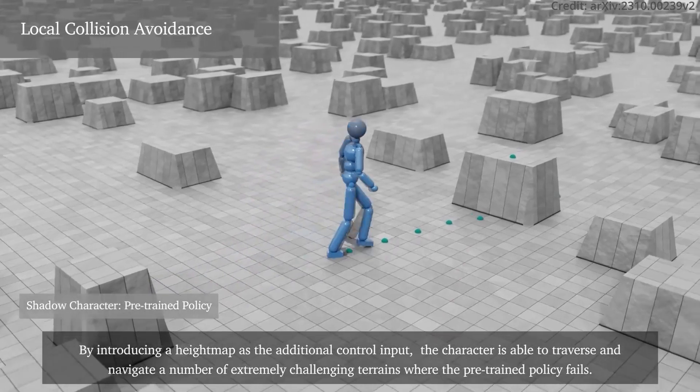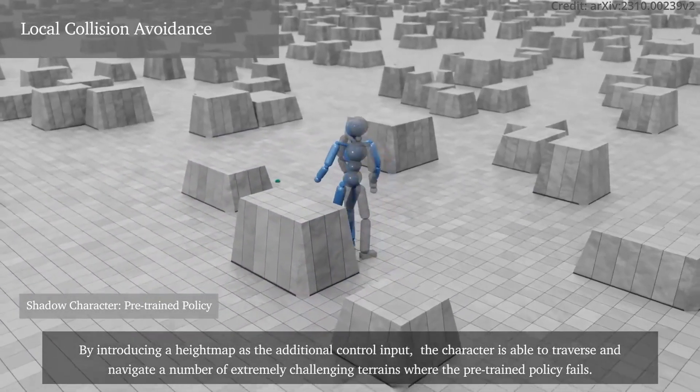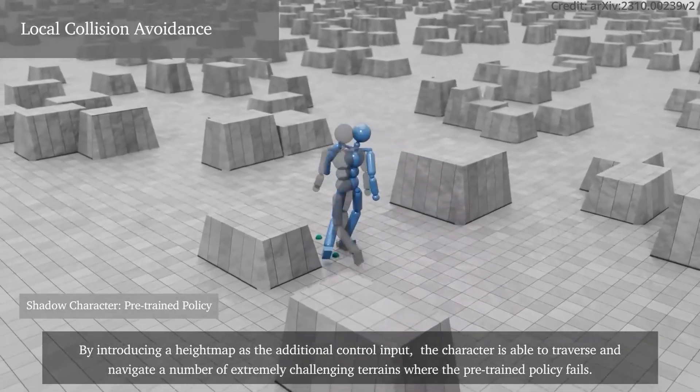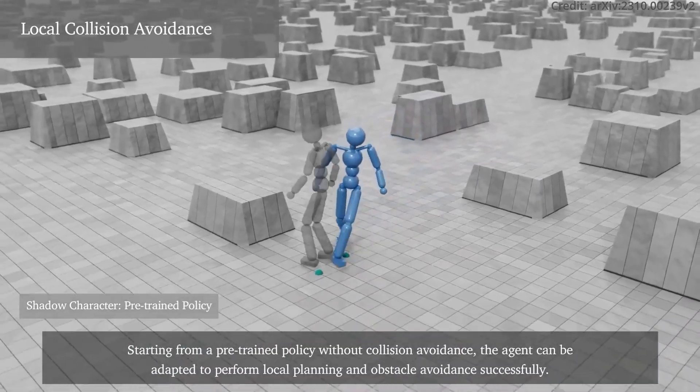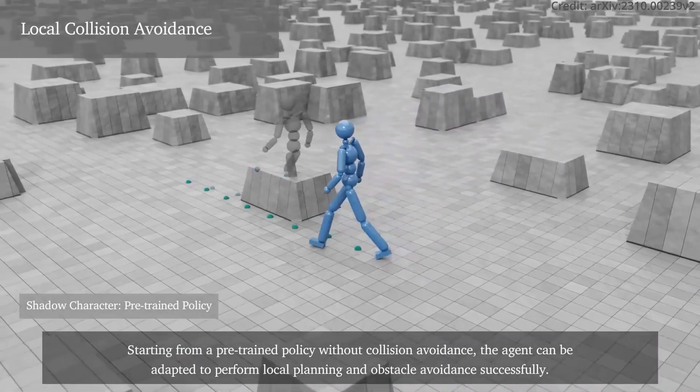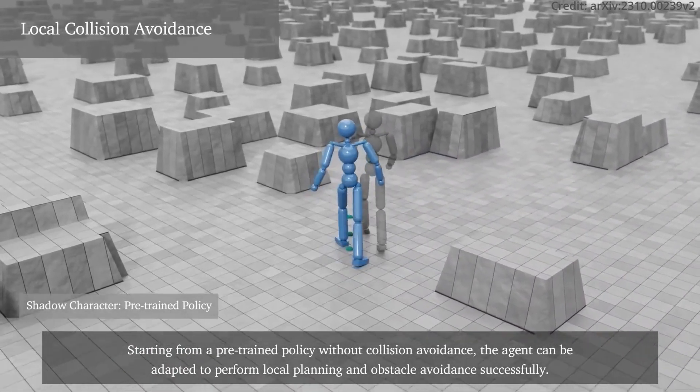Furthermore, AdaptNet also extends its capabilities to local planning and obstacle avoidance, starting from a pre-trained policy without collision avoidance. The agent can be adapted to perform local planning and obstacle avoidance successfully, showcasing a versatile application in real-world scenarios where obstacle navigation is crucial.